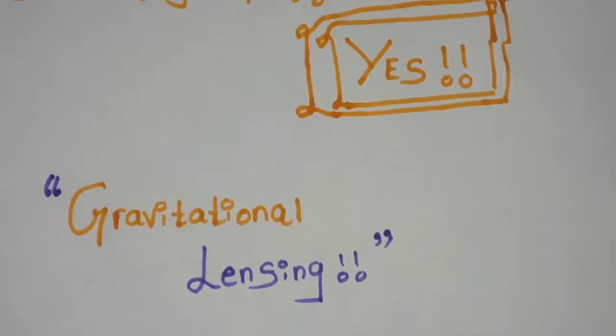Einstein described this process as gravitational lensing. The phenomenon of the bending of photons or bending of light due to an extra strong gravitational force of the black hole is nothing but gravitational lensing. This is what scientists say.